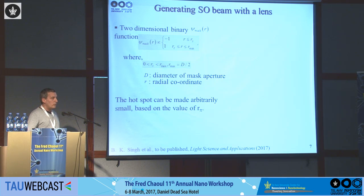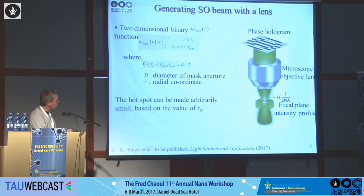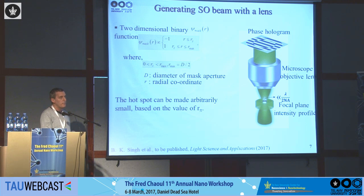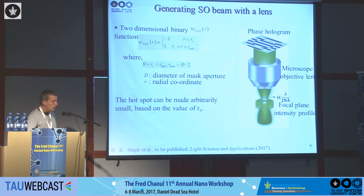Now we can take all of this and use it. This is the function I discussed: it's minus one on some ring and plus one on an internal circle. I can also add some carrier frequency, but this will not change the result. I send this to a lens, and here I will get a super-oscillating spot. The feature here can be as small as I want — much smaller than lambda F-number. Moreover, because it's a band-limited function, there isn't any frequency larger than 1 over lambda, so this beam can propagate to the far field. It's not like an evanescent wave.